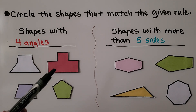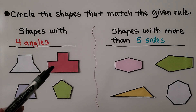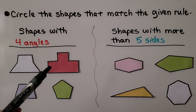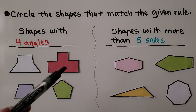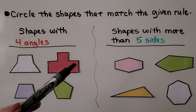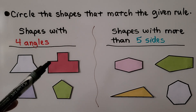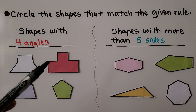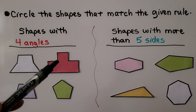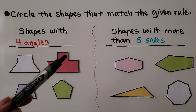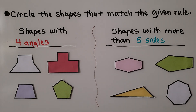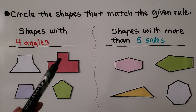Do you think this one has four angles? We can count one, two, three, four — but then we have five, six, seven, eight angles. And it has eight sides, so it's not this one.